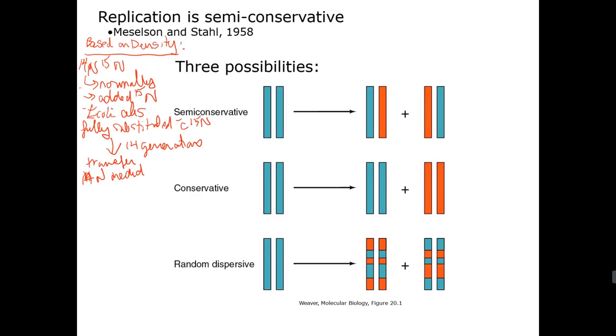So this new media contains a regular N14 nitrogen source. So after that your newly synthesized DNA rather than containing N15 will contain N14. So it becomes less dense from the parental N15 strands.